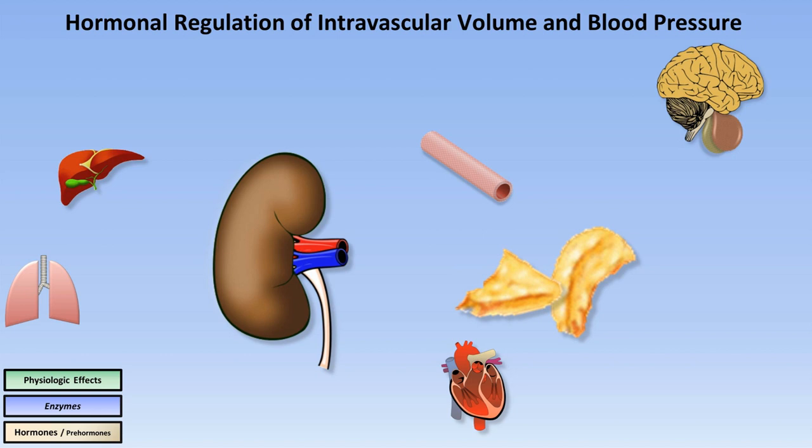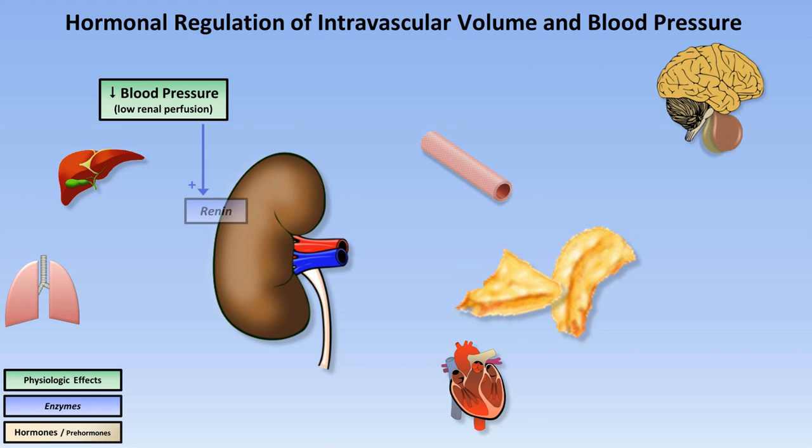Let's imagine the physiologic derangement of low systemic blood pressure, which necessarily results in low renal perfusion pressure. This triggers the juxtaglomerular cells in the kidney to release renin. Renin converts the prehormone angiotensinogen produced by the liver to angiotensin 1. This is then converted to the active hormone angiotensin 2 by the enzyme angiotensin-converting enzyme, which itself is primarily produced in the lungs.